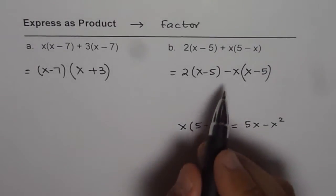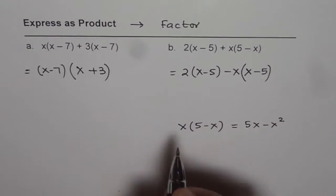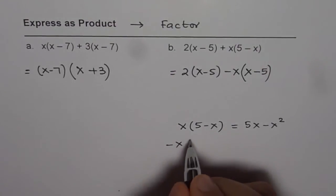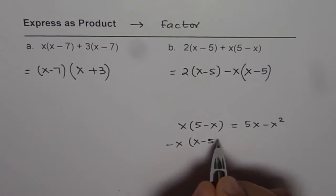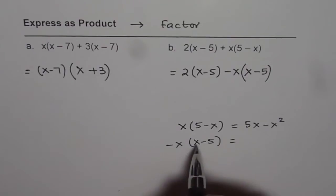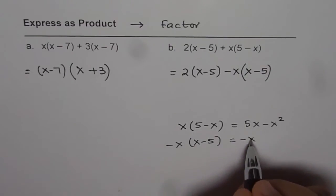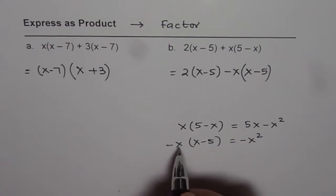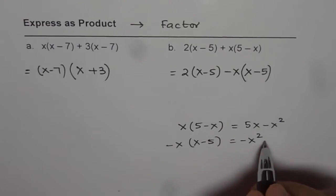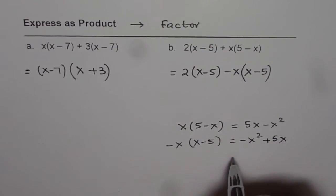If you do the same thing with the second factor which I have written which is minus x times x minus 5. Minus x times x is minus x square and minus x times minus 5 gives you plus 5x which is same as 5x minus x square.